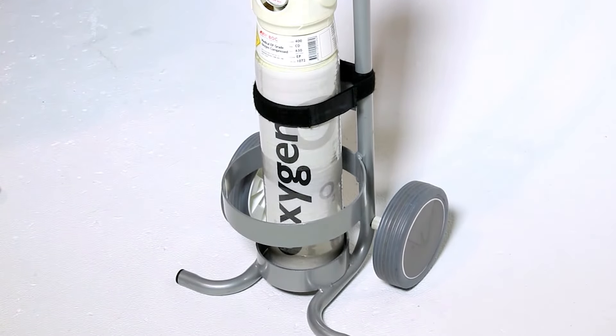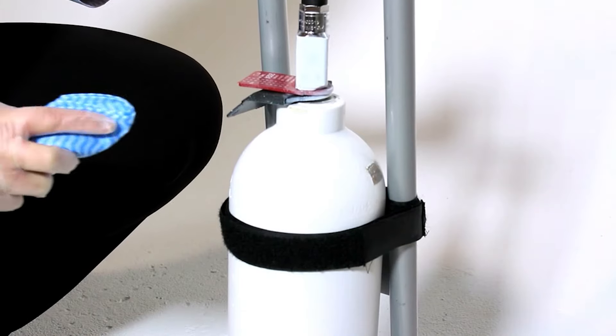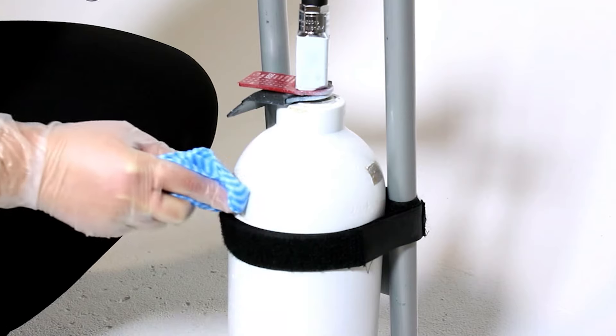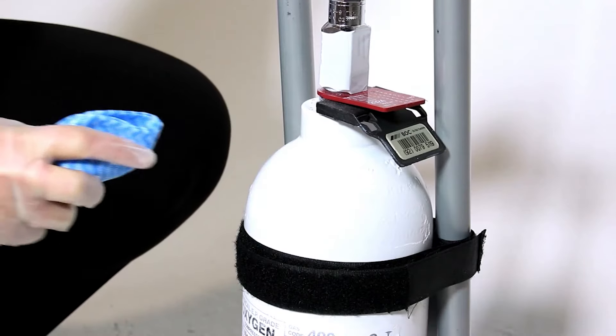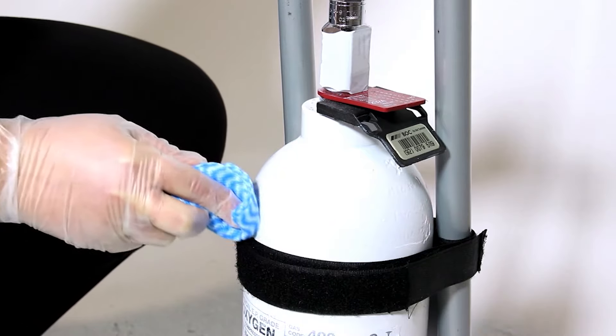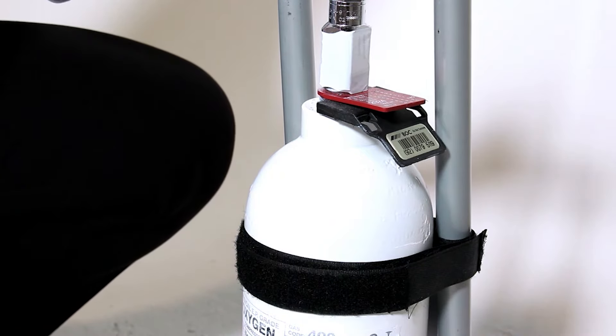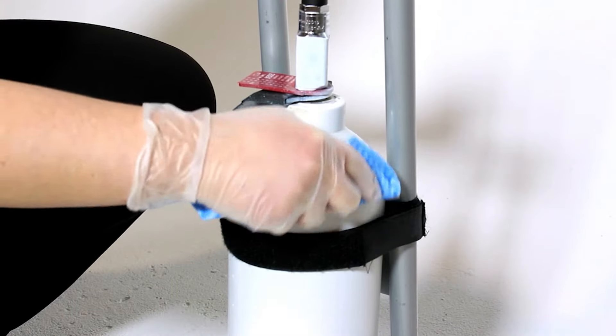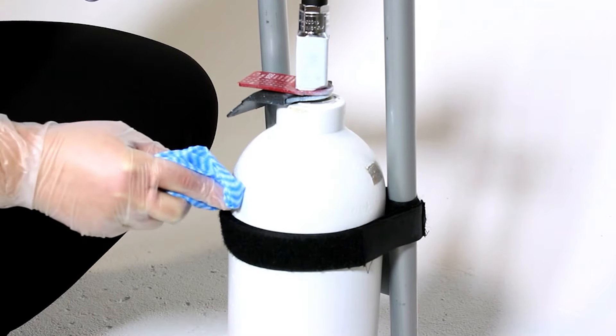Secondly, before using cylinders, regulators and other gas equipment, ensure they are free of oil, grease and other lubricants. These substances may cause fires when used with concentrated oxygen and nitrous oxide. If these contaminants are found, then wipe the cylinder with a clean, dry cloth until it is free of contamination. If in doubt, replace the cylinder.